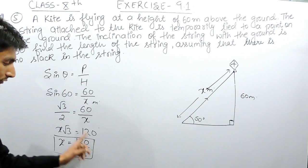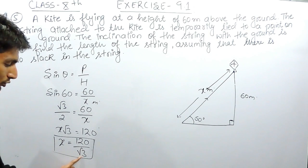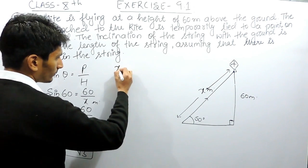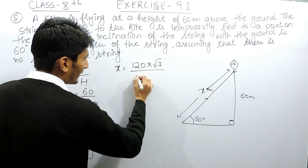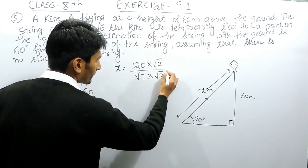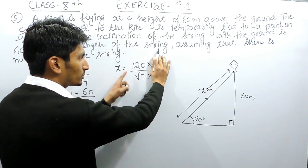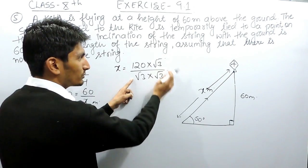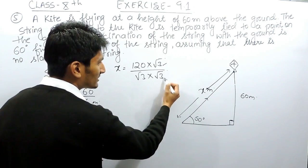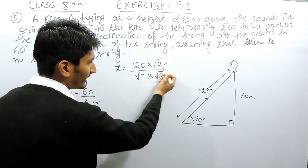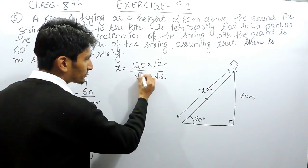If you have to further solve this expression, because there is a root in the denominator, you have to rationalize this. For that, you have to multiply with the numerator as well as with the denominator. You have to multiply as well as divide this so that we cancel this out and there will be no effect on this expression.